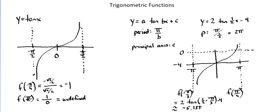Then looking at the input pi over 4, 2 times tangent of 1 half times pi over 4 minus 4, which when I evaluate in the calculator is an output of approximately negative 3.172.